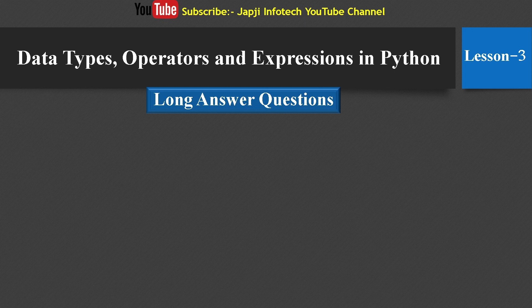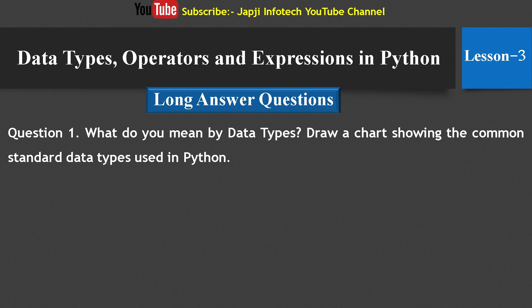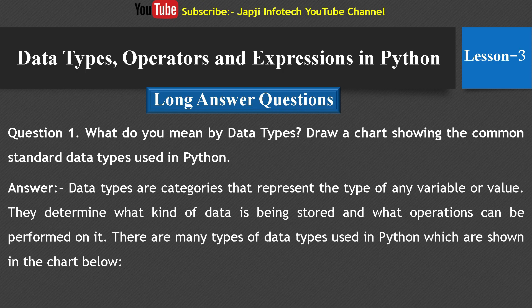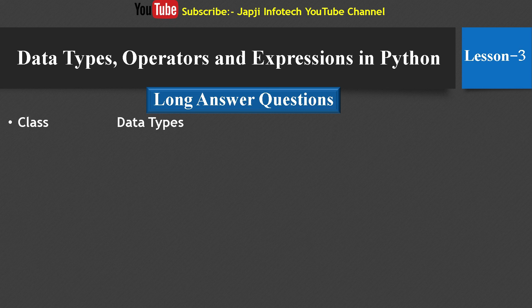Now, the long answer section. First question: What do you mean by data type? Draw a chart showing the common standard data types used in Python. Answer: Data types are categories that represent the type of any variable or value. They determine what kind of data is being stored and what operations can be performed on it. There are many types of data types used in Python, shown in the chart below.